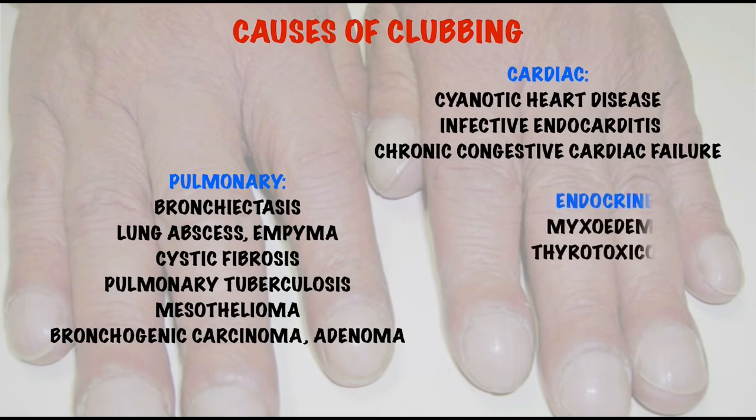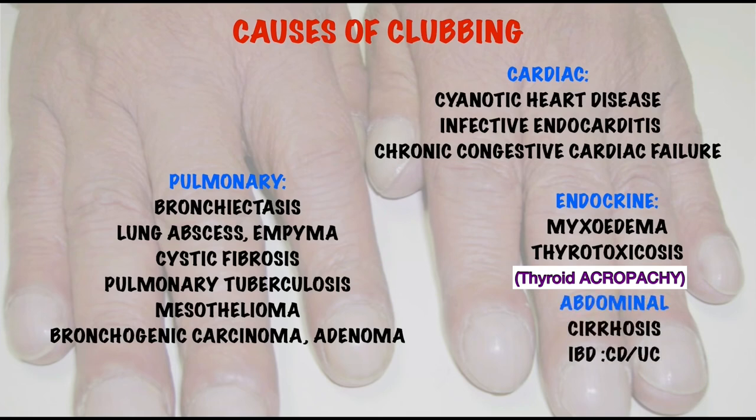Endocrine causes include myxedema and thyrotoxicosis. Abdominal causes include cirrhosis and inflammatory bowel diseases like Crohn's disease and ulcerative colitis.